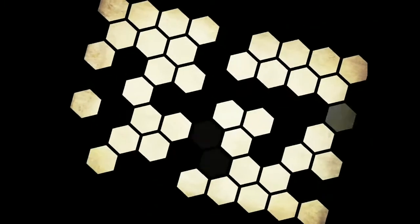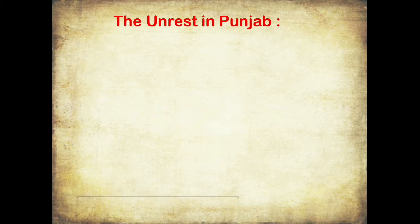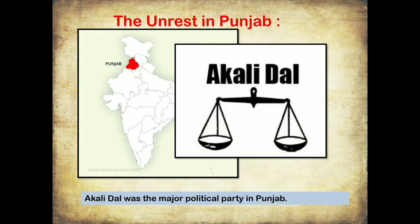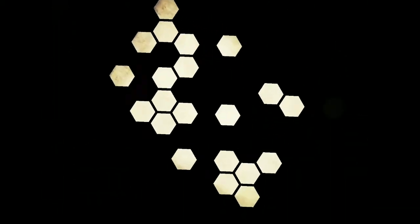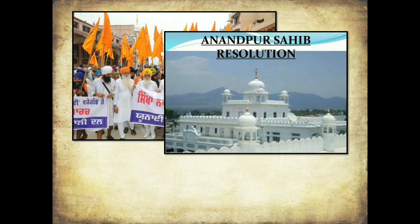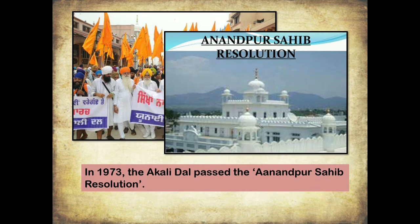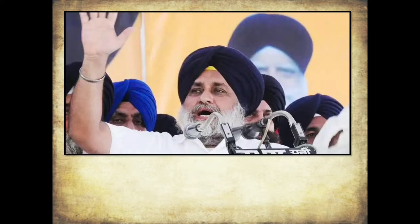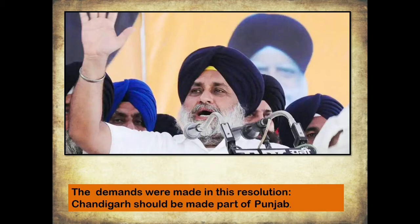Let us begin with the situation in Punjab. In 1970, the Akali Dal was the major political party in Punjab — it was founded and had ruling influence there. In 1973, the Akali Dal passed the Anandpur Sahib Resolution, putting forward several key demands before the government.